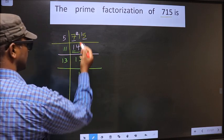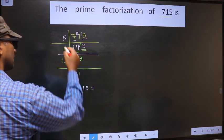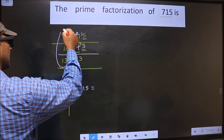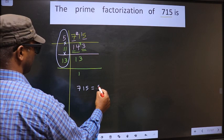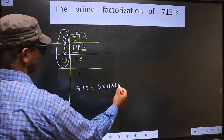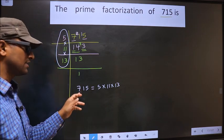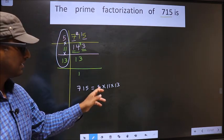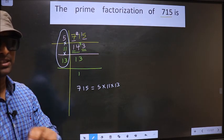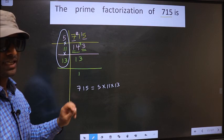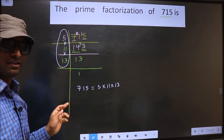So the prime factorization of 715 is the product of these numbers: 5×11×13. This is also called the product of prime numbers of 715. Am I clear?